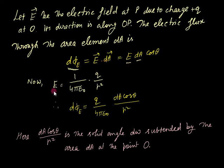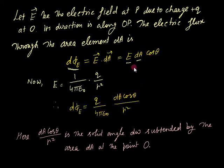The formula for E is 1 over 4 pi epsilon-naught times Q over r squared. Putting this value in, it becomes Q over 4 pi epsilon-naught times dA cos theta over r squared. Here, dA cos theta over r squared is basically the solid angle d-omega subtended by the area dA at the point O.